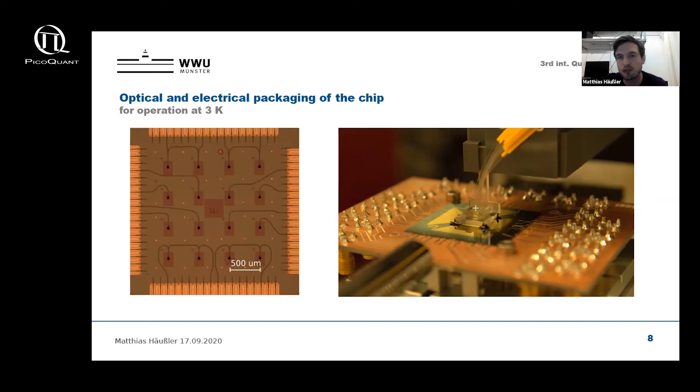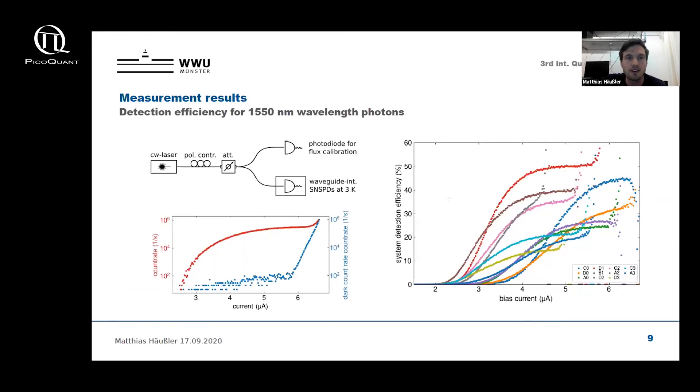Now let's come to the characterization of the array at cryogenic temperatures. First we characterize the efficiency of our detectors. Our setup consists of a CW laser, a fiber polarization controller, and an attenuator to attenuate the laser signal to the single photon level. In order to calibrate the photon flux onto the detector, we split the signal and place a photodiode in one arm and use it as a reference. Then we set the photon flux to a fixed value and increase the bias current of our SNSPDs while monitoring the count rate, what you can see on the lower left picture here. With increasing bias current, the detector becomes more sensitive to incoming photons and the count rate increases.